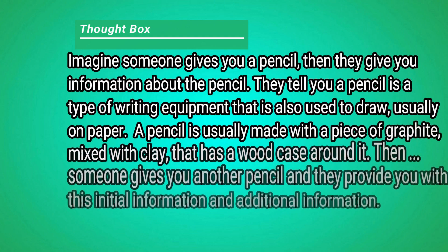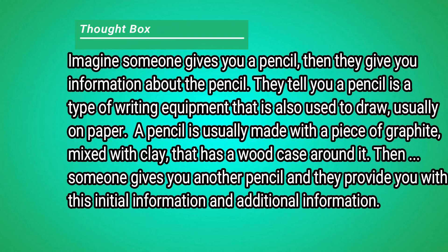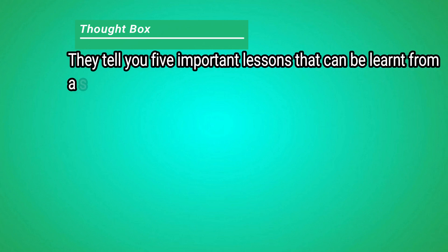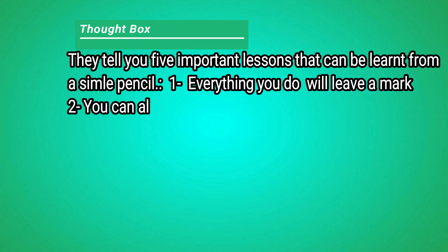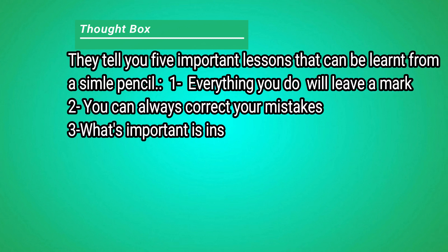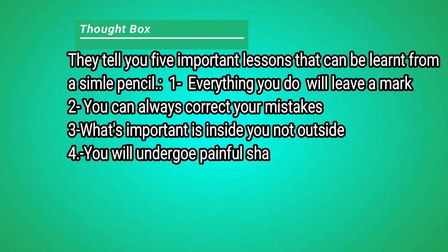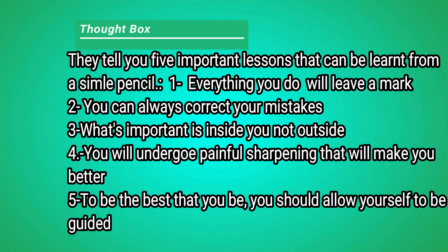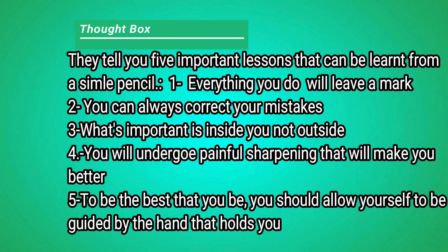They tell you a pencil is a type of writing equipment also used to draw, usually on paper, and that it is usually made with a piece of graphite mixed with clay that has a wood case around it. Then someone gives you another pencil and provides additional information — five important lessons from a simple pencil: 1. Everything you do will leave a mark. 2. You can always correct your mistakes. 3. What's important is inside you, not outside. 4. You will undergo painful sharpening that will make you better. 5. To be the best that you can be, you should allow yourself to be guided by the hand that holds you.